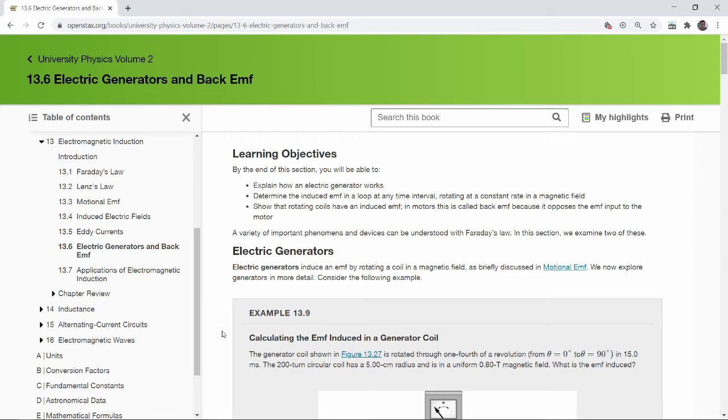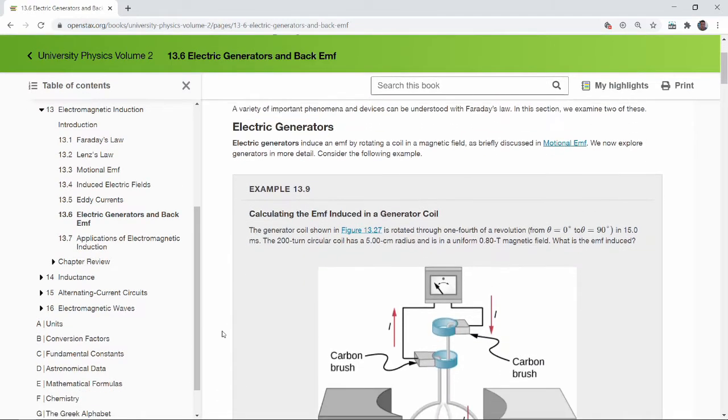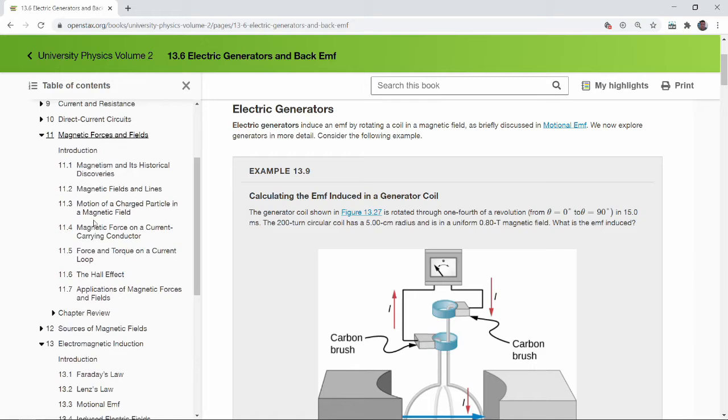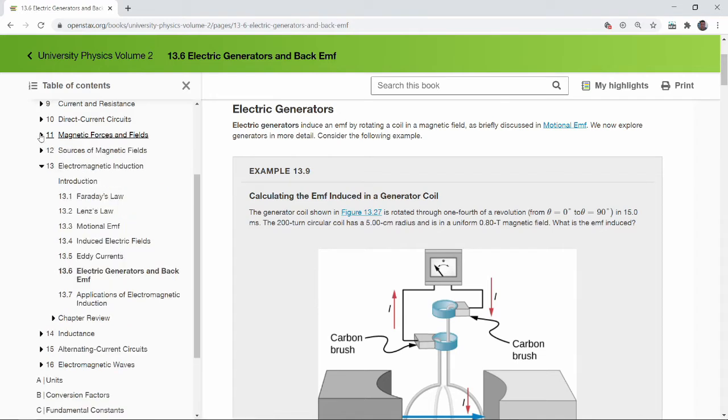The second application of Faraday's law is the electric generator. Electric generator is the other side of electric motor. And in fact, this is why we haven't spent a lot of time talking about electric motor, even though we could have. When we covered the magnetic force back in chapter 11, we actually had everything we needed to talk about electric motor. But we had to wait until now, after we have covered Faraday's law, so that we can talk about all the aspects of electric motor.